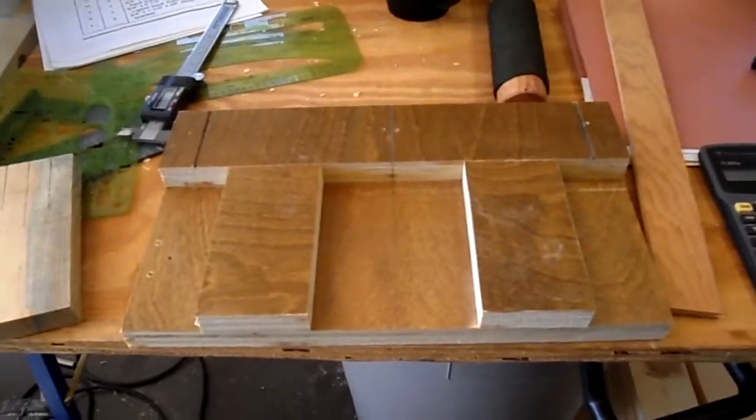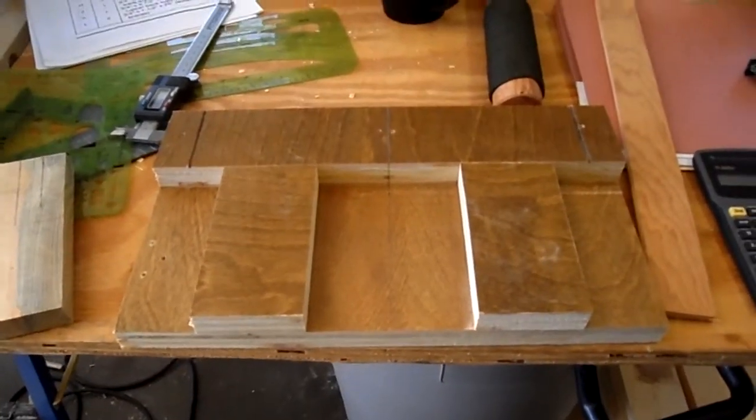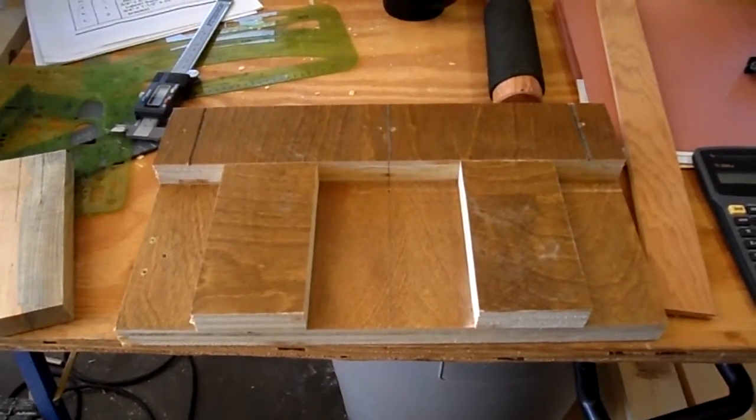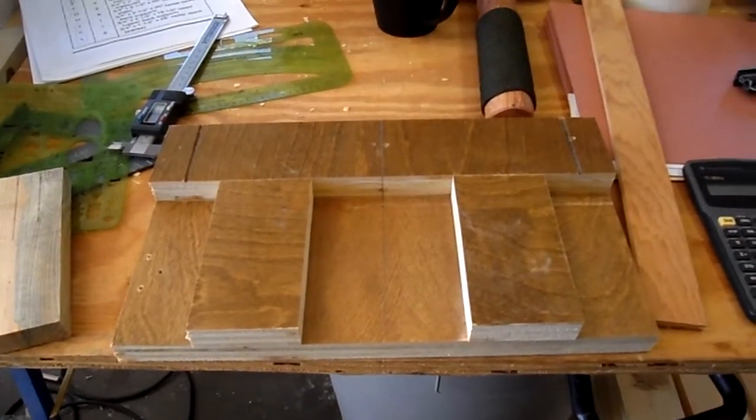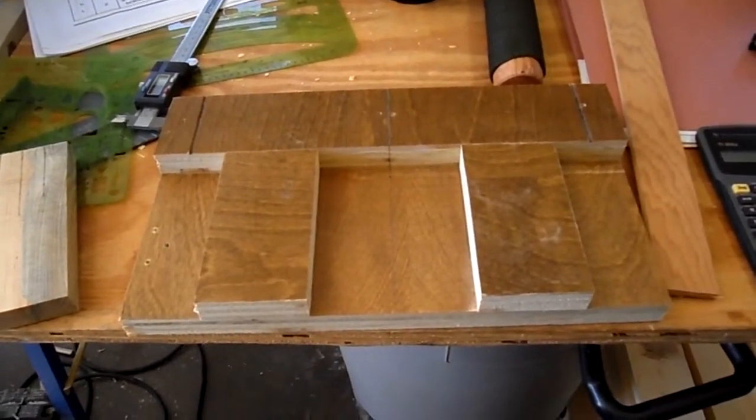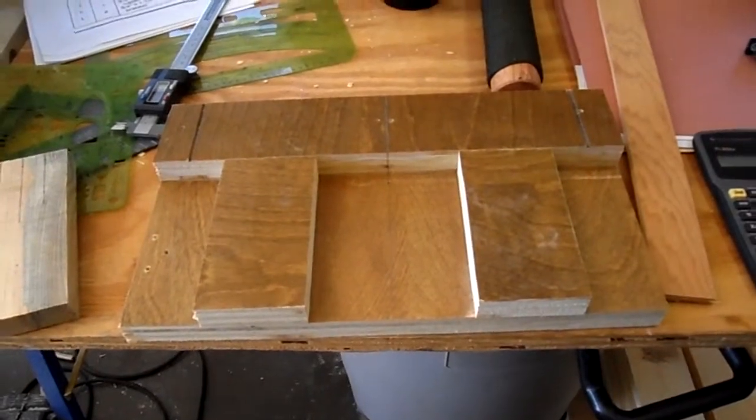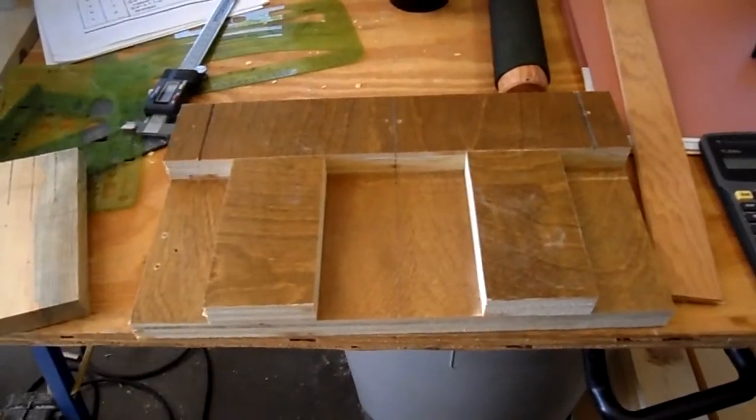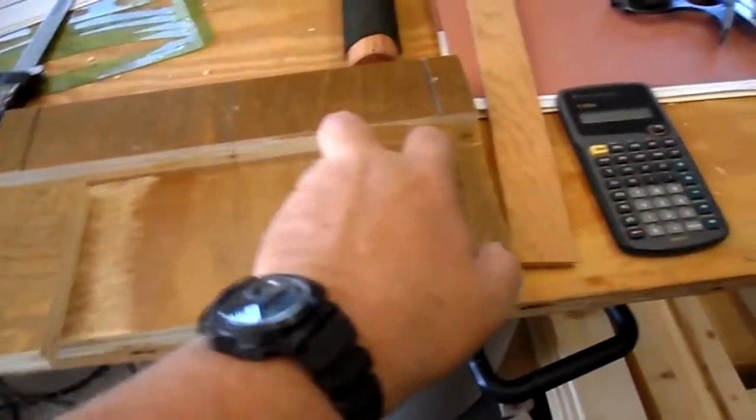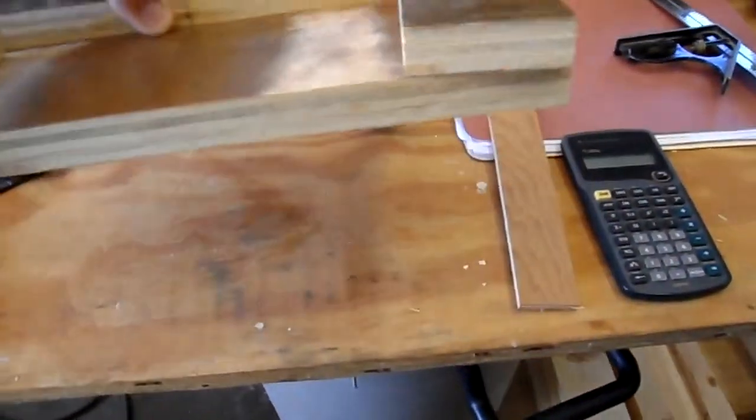Instead of making a template for the seat slats, the reason is I've got for each chair there would be eight slats for 32 holes that I'd have to drill. Instead of having to put a template on each one and drill it, I'm building a drilling jig.